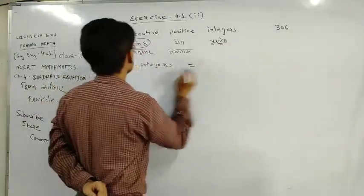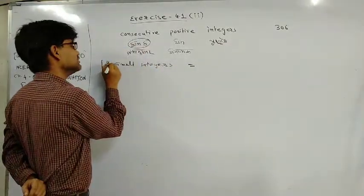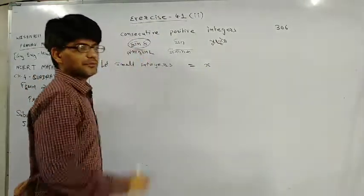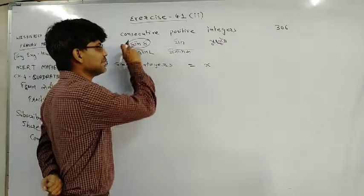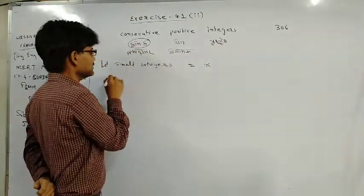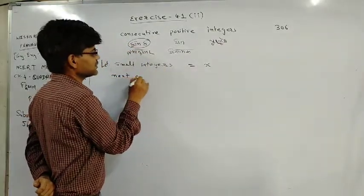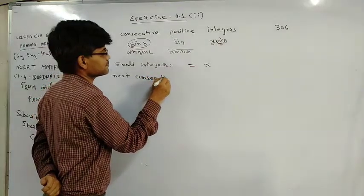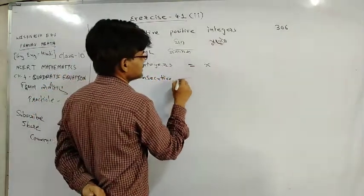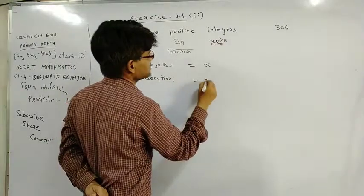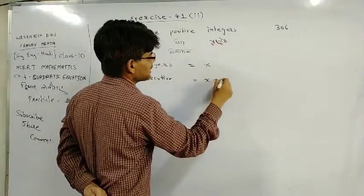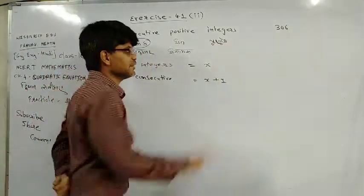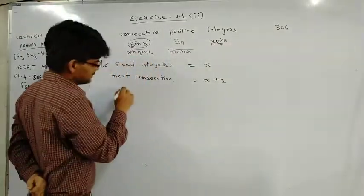So let the small integer is x. Then after that, what will be the next consecutive positive integer? The next consecutive integer is x plus 1. It will be one more. If we take 22, then it becomes 23.